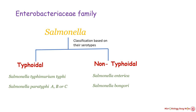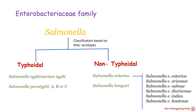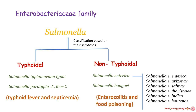Salmonella enterica enterica serotype is mostly responsible for non-typhoidal salmonellosis in humans. Other serotypes involved can be Salmonella enterica arizonae, Salmonella enterica salamae, Salmonella enterica diarizonae, Salmonella enterica indica, and Salmonella enterica houtenae. Human infections caused by arizonae and salamae are rare; other serotypes are frequently found in cold-blooded animals. In typhoidal type, prominent symptoms are fever and septicemia; in non-typhoidal type, main symptoms are enterocolitis and food poisoning.